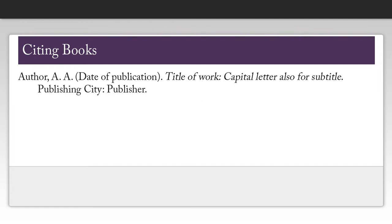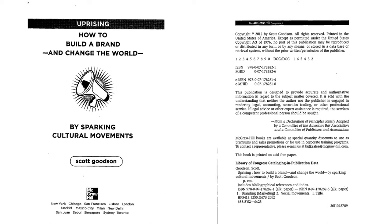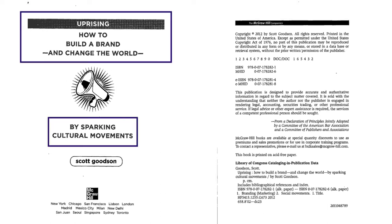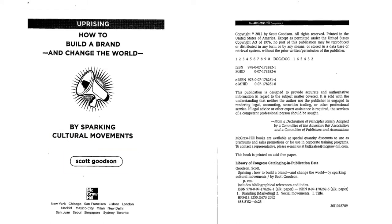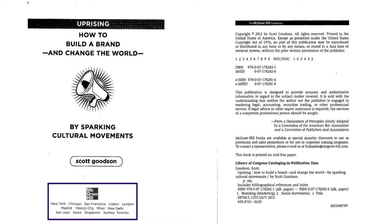Most of this information can be found on the title page. Let's take a look at the title page of a book by Scott Goodson. The book is called Uprising: How to Build a Brand and Change the World by Sparking Cultural Movement. Just under that is the name of the author — sometimes you'll have more than one. And then at the bottom of the page, you'll usually find the publisher. In this case, McGraw-Hill.